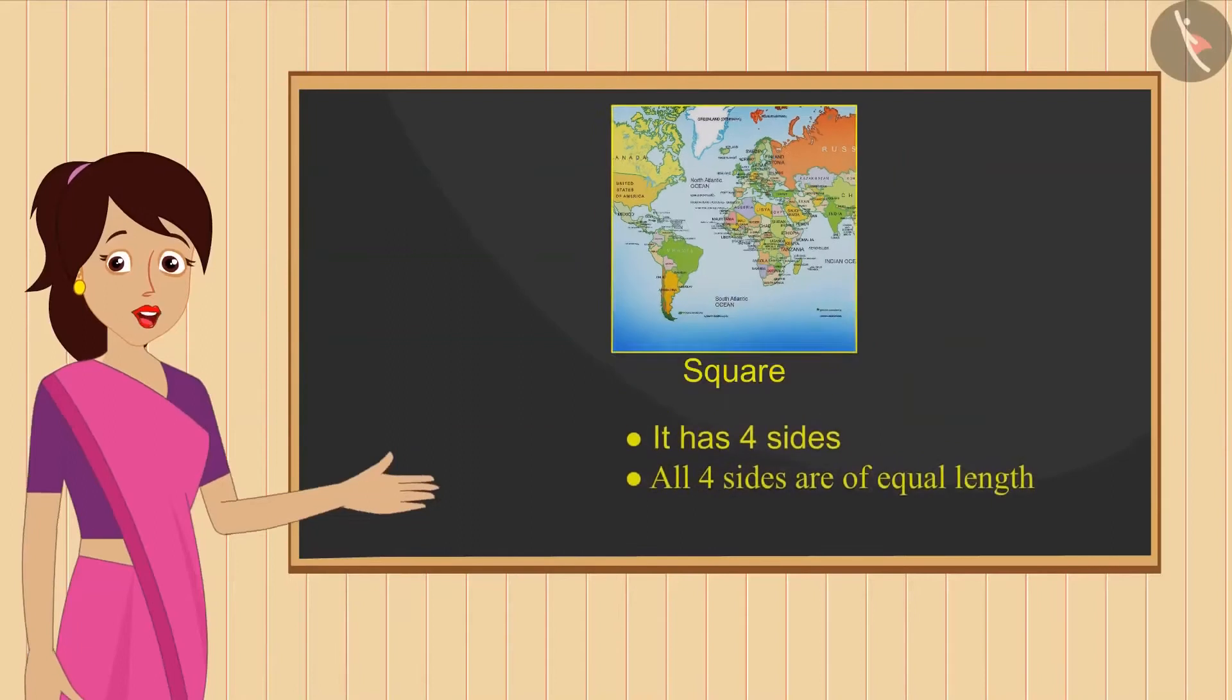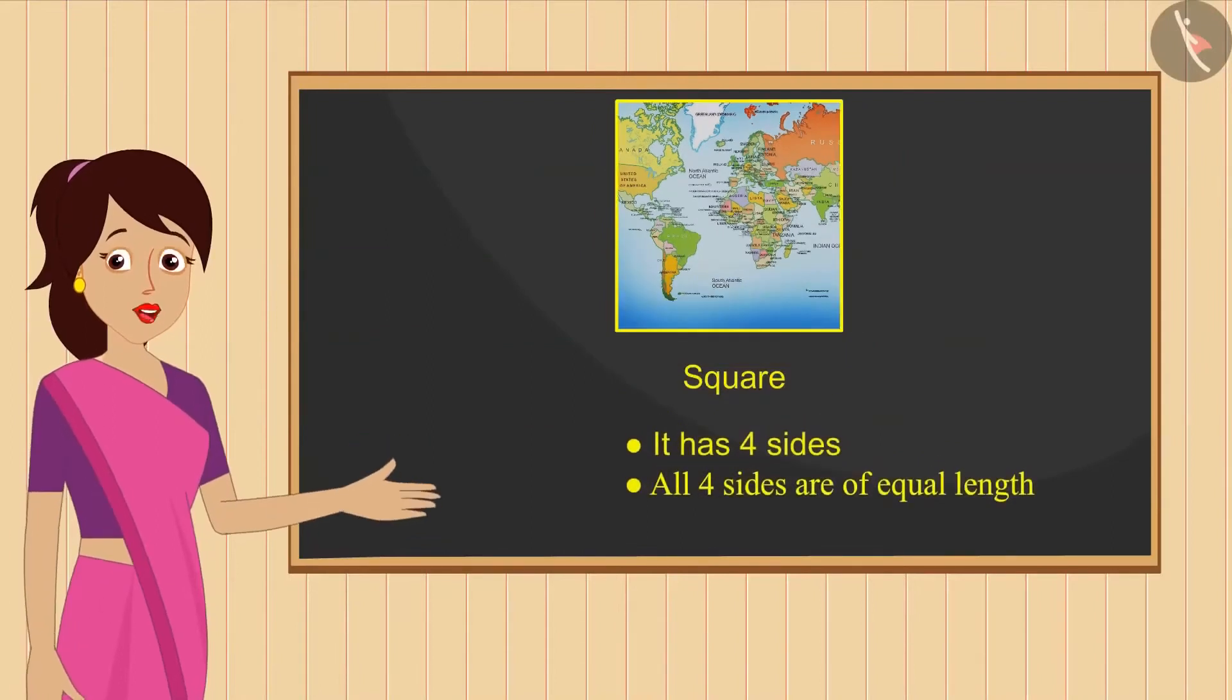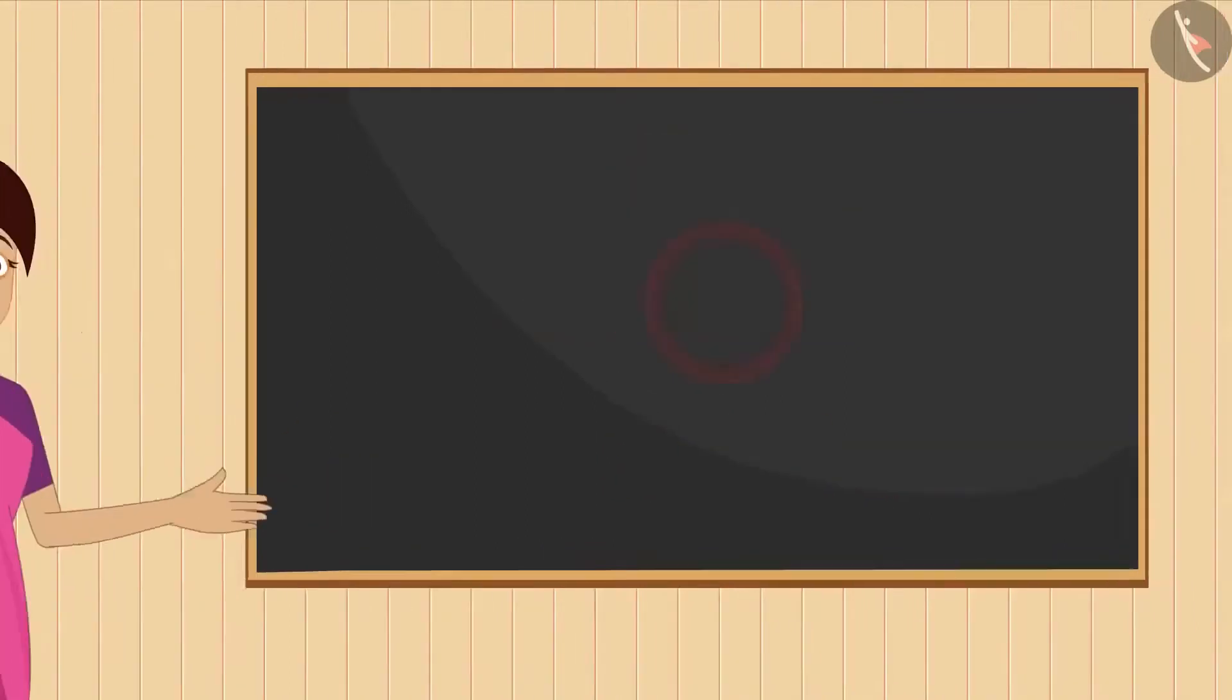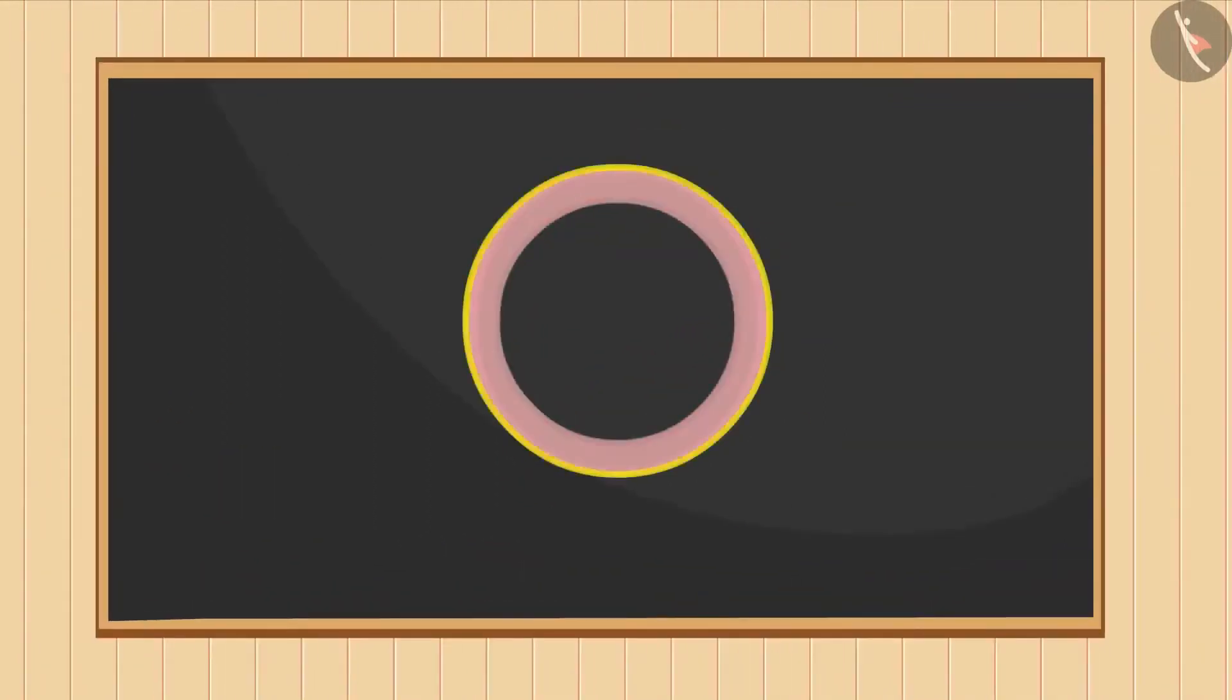Now tell me which shape shall we get by tracing this map? This is a square, very good Ravi. A square is a shape that has four sides and all four sides are of same length.